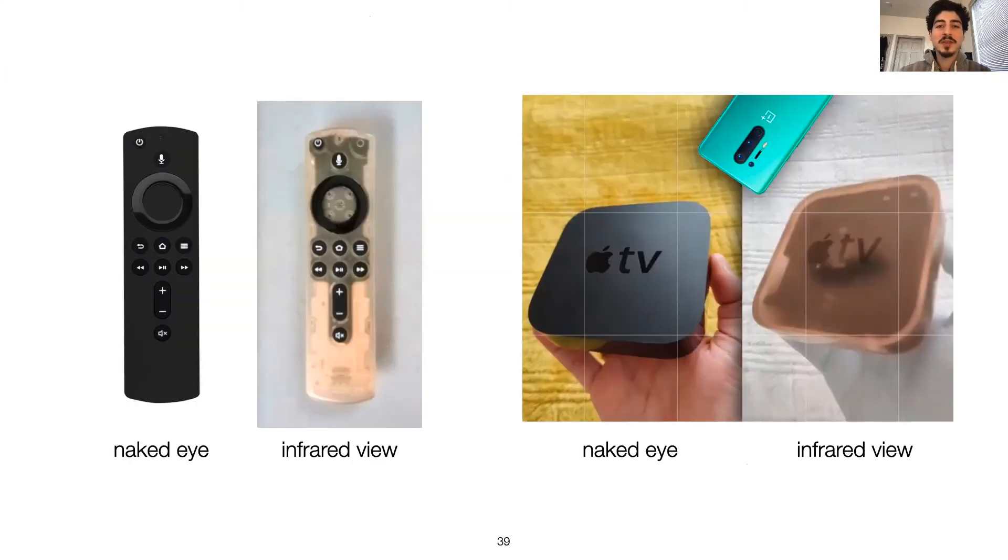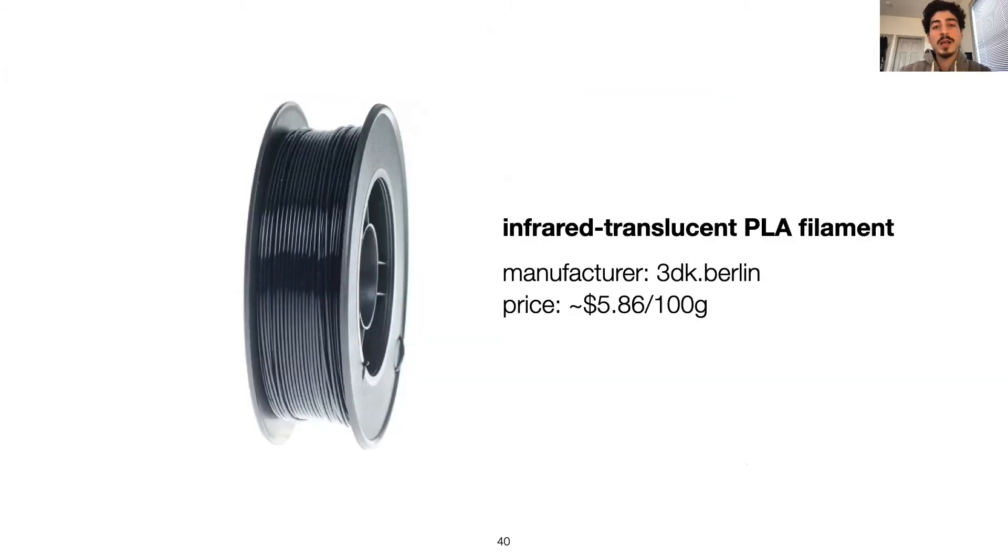One key observation here is that many plastic materials actually pass near-infrared light. Such materials are commonly used in TV remotes and other electronics. For our goal, we had to find an infrared translucent 3D printable material, and after extensive testing, we decided to use a filament manufactured by 3DK Berlin. Since this filament is based on the most common 3D printing material, PLA, it is as affordable as regular filaments and can be printed at regular temperatures.